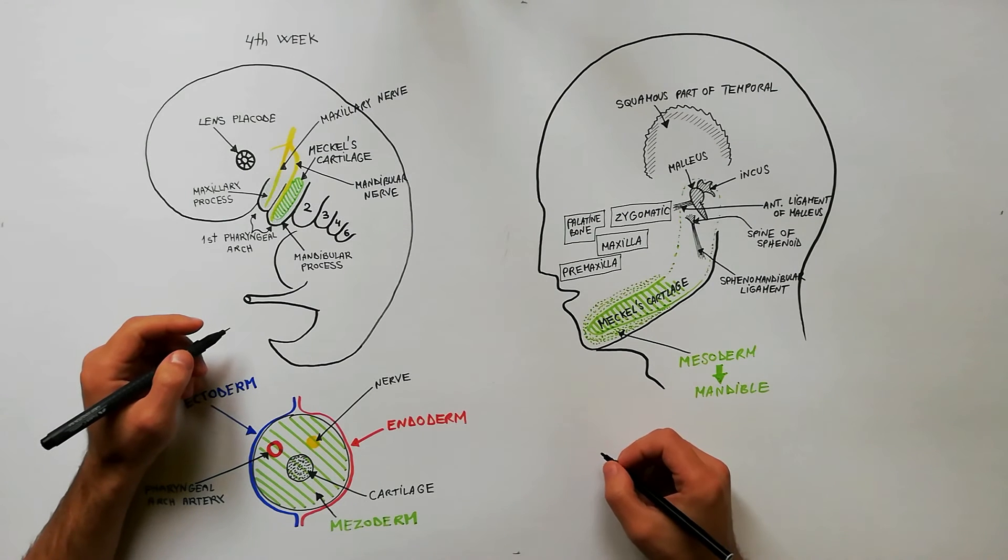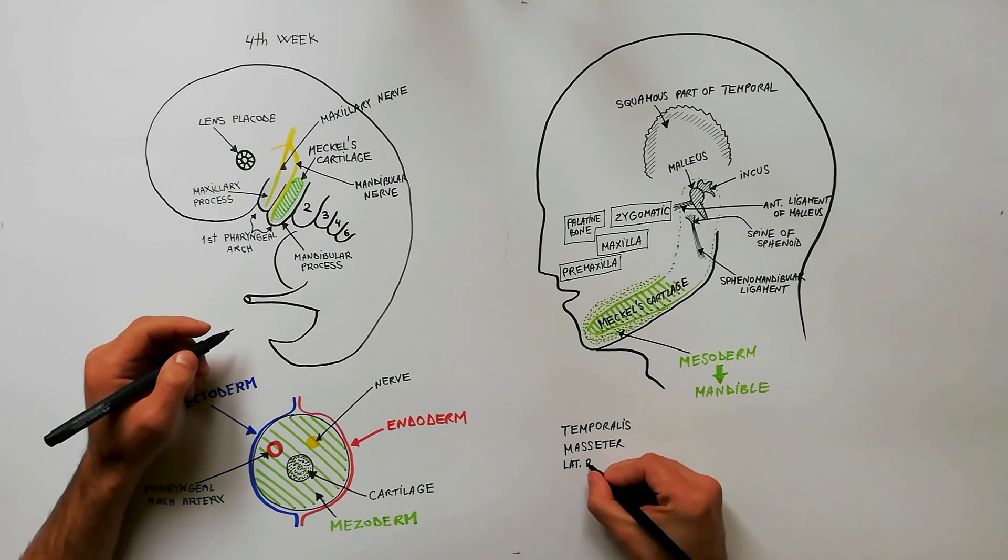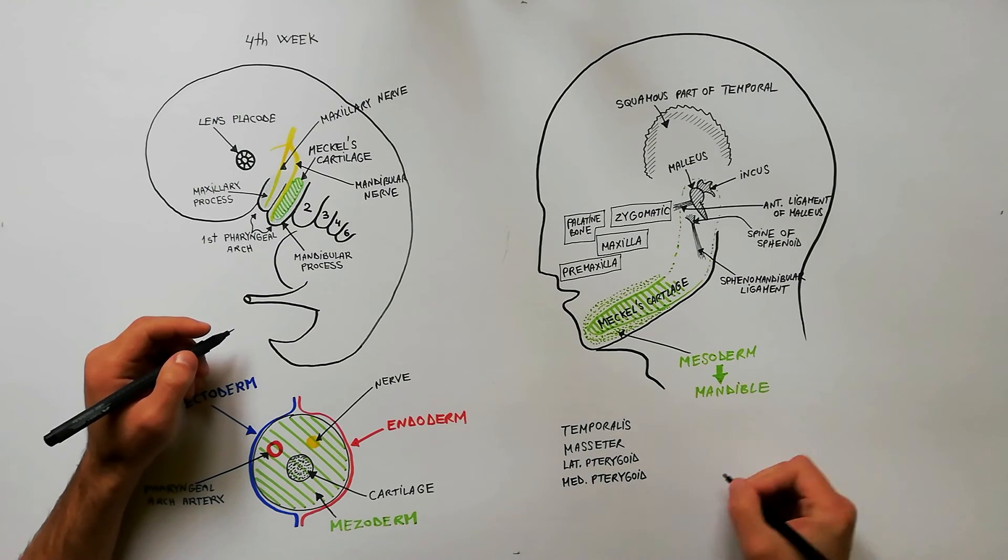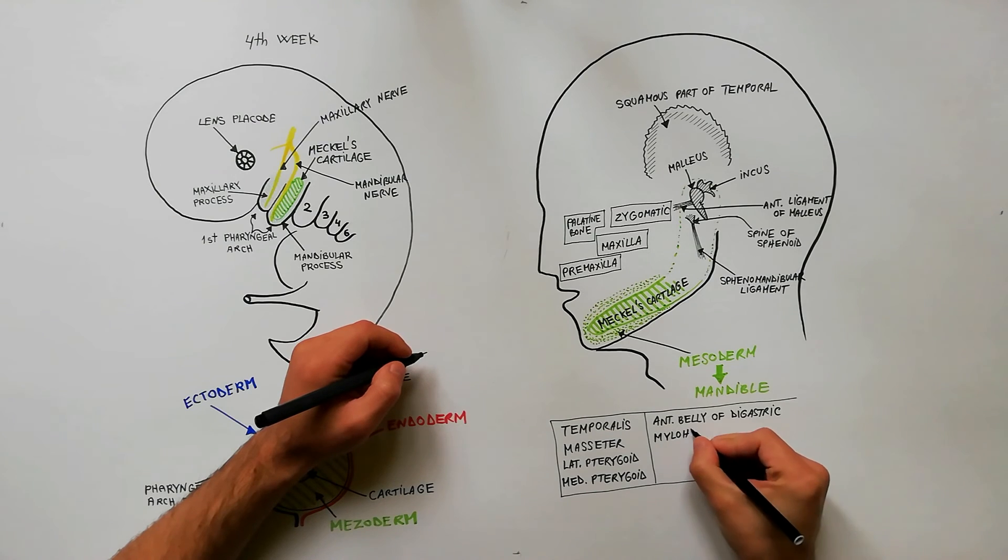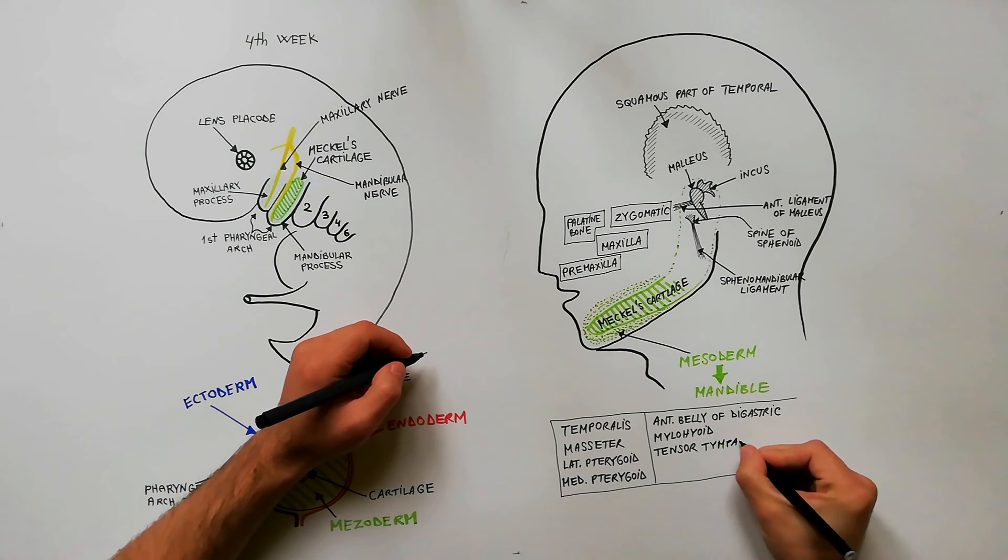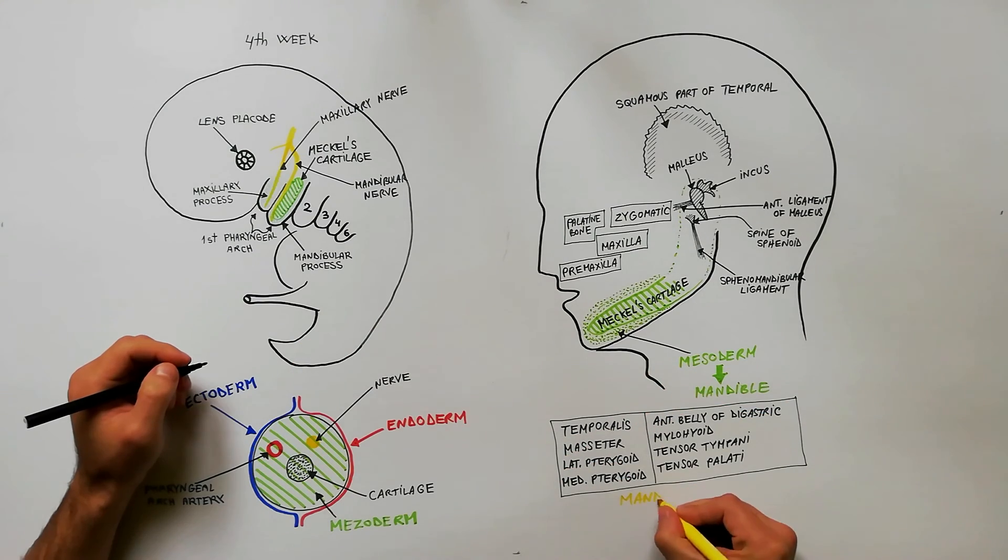Eight muscles are derived from the first pharyngeal arch: temporalis, masseter, lateral pterygoid, medial pterygoid, anterior belly of digastric, mylohyoid, tensor tympani and tensor palatini. All these muscles are supplied by the mandibular nerve.